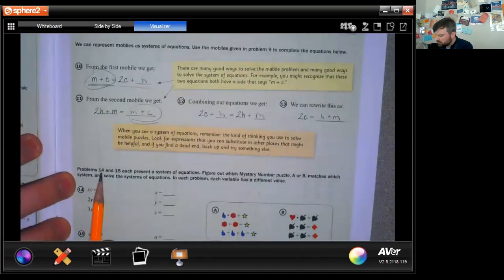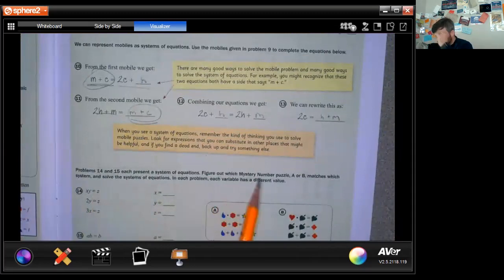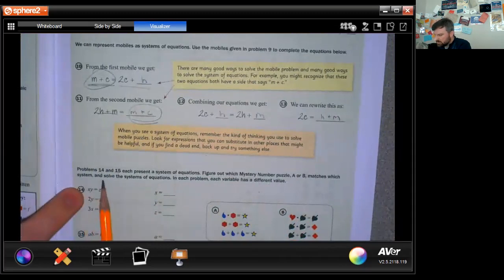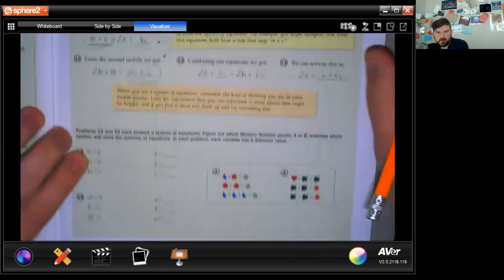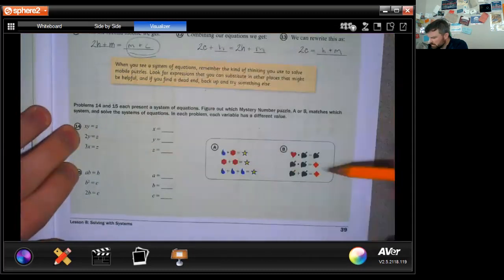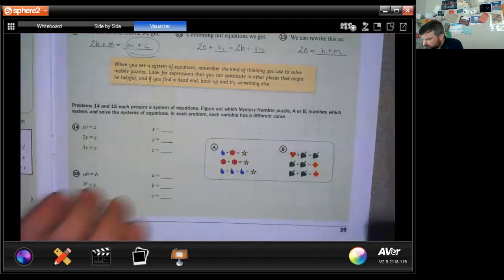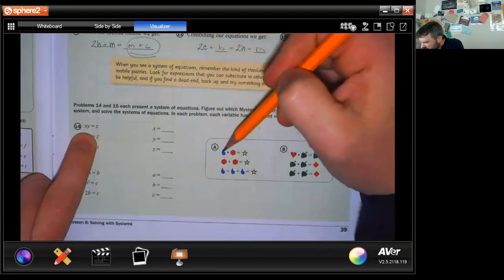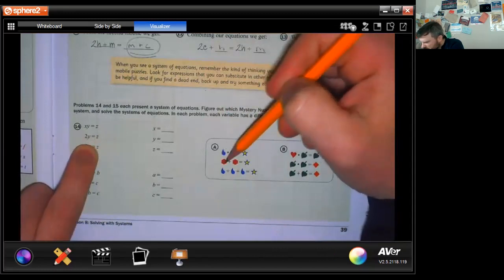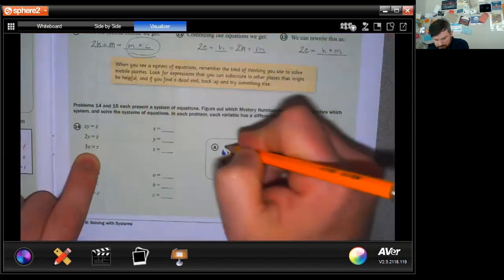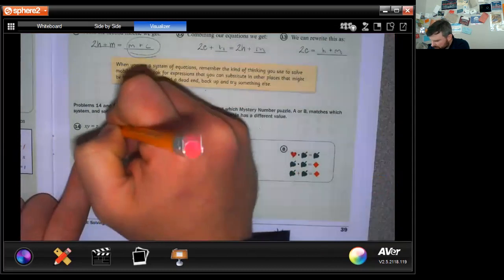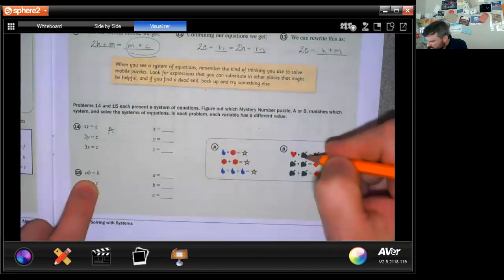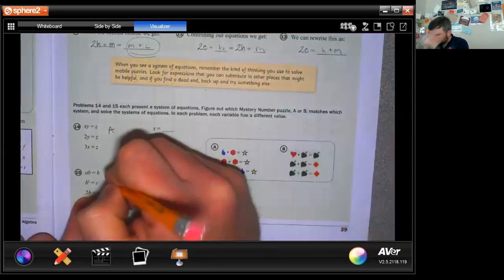Problems 14 and 15 each present a system of equations. Figure out which mystery number puzzle A or B matches the system. Solve the system of equations. In each problem, each variable has to be different. So this is going to match one of these, and this one will match one, and then we need to solve it. X, Y, X times Y equals Z. So different, different, different, different, multiply. Two Y, Z, and so this one is A. So this is A. And then A times B equals B squared, and this one is B. So let's solve this one first here. And each one is different.